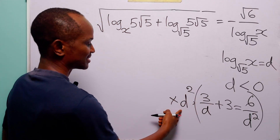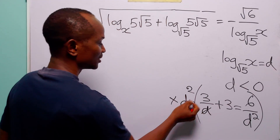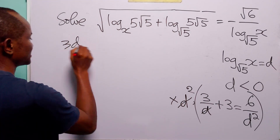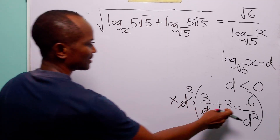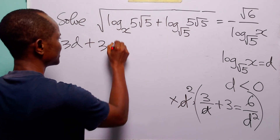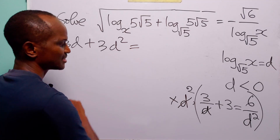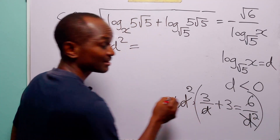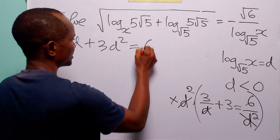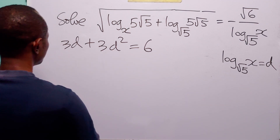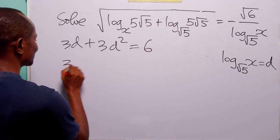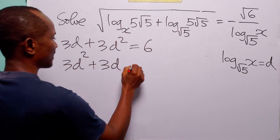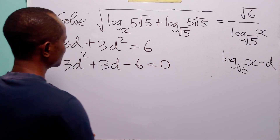3 over d times d squared — this will cancel one d, leaving us with 3d. 3 times d squared is 3d squared. And 6 over d squared times d squared simply leaves us with 6. Rearranging this equation, we have 3d squared plus 3d minus 6 is equal to 0.